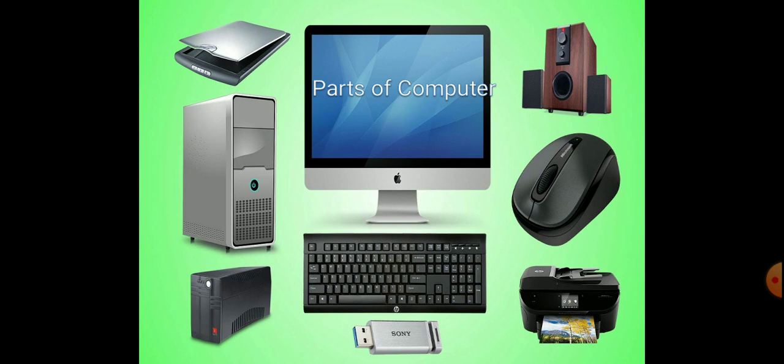The different parts of a computer are: CPU, monitor, mouse, keyboard, and printer. All these parts work together to do any work on a computer. Come, let us see this in detail.